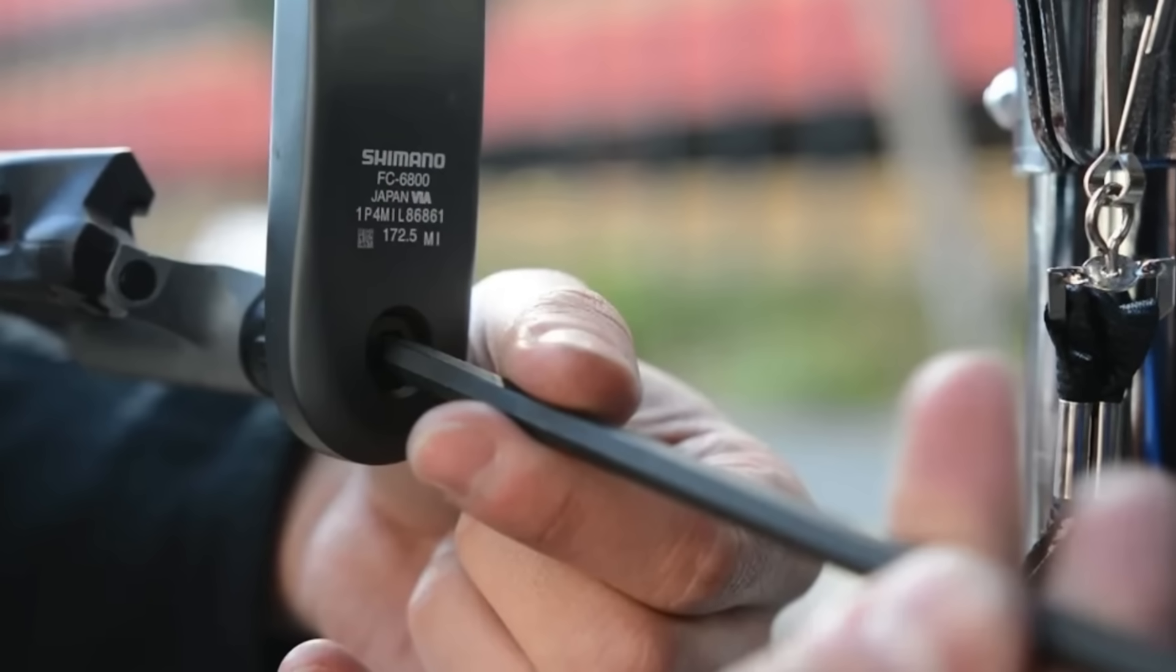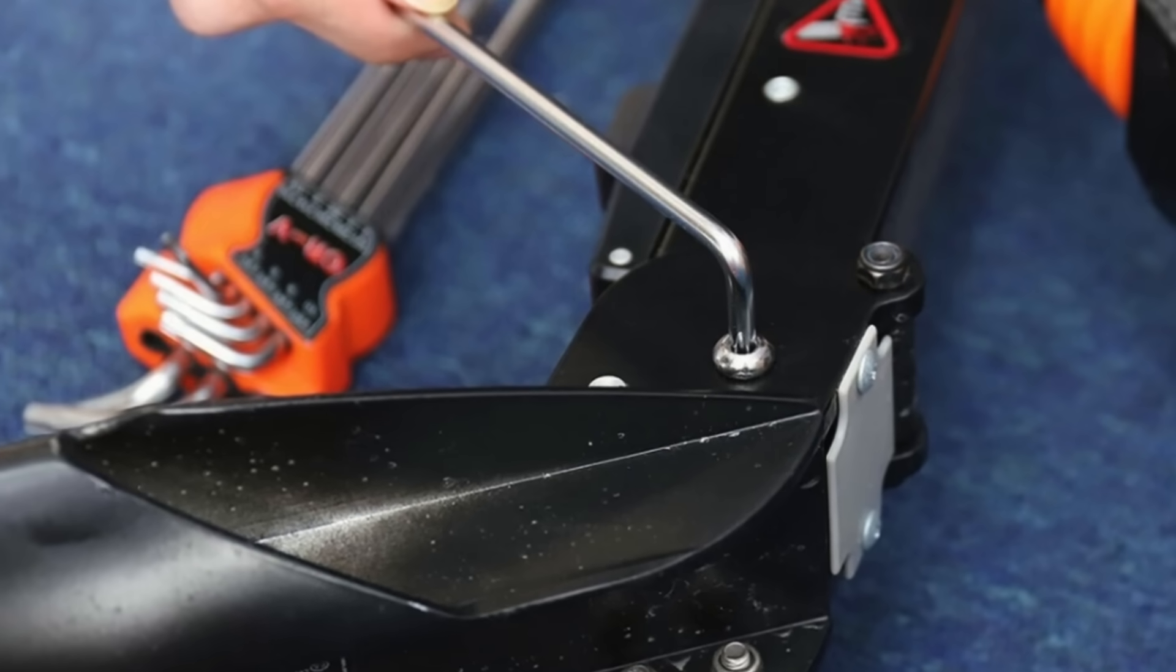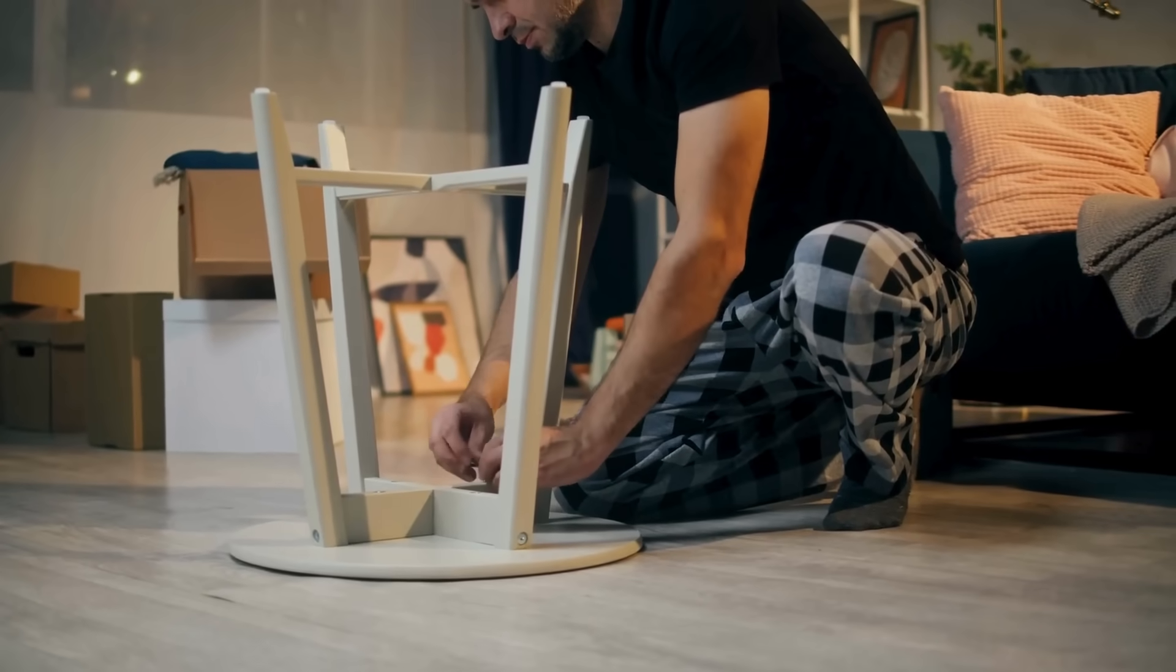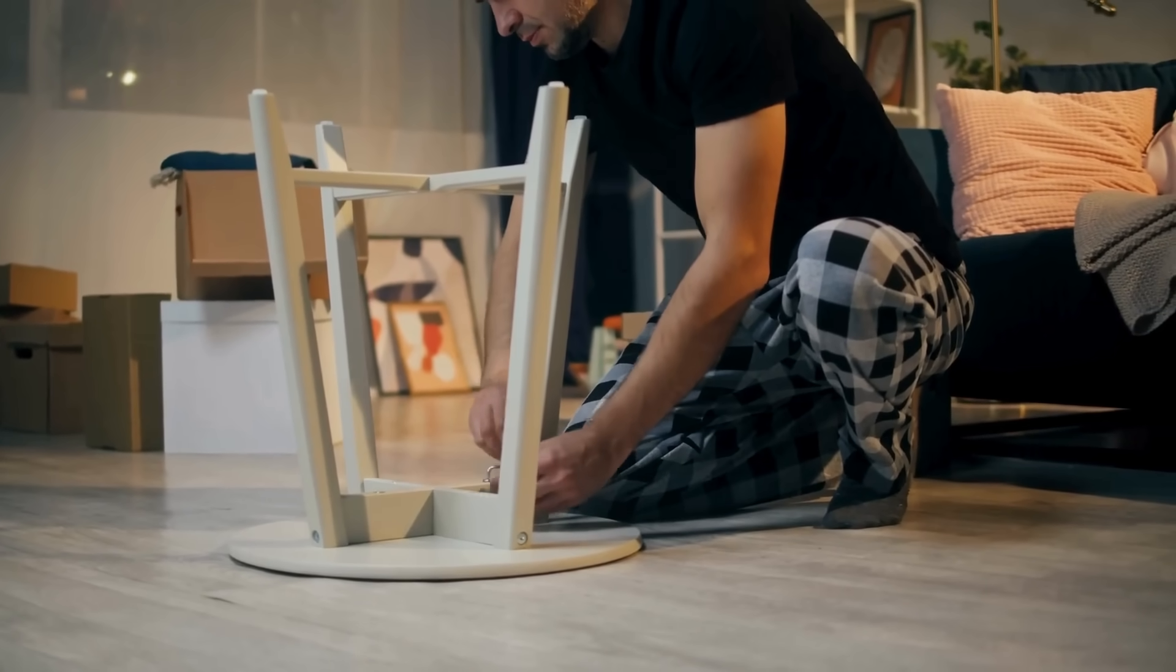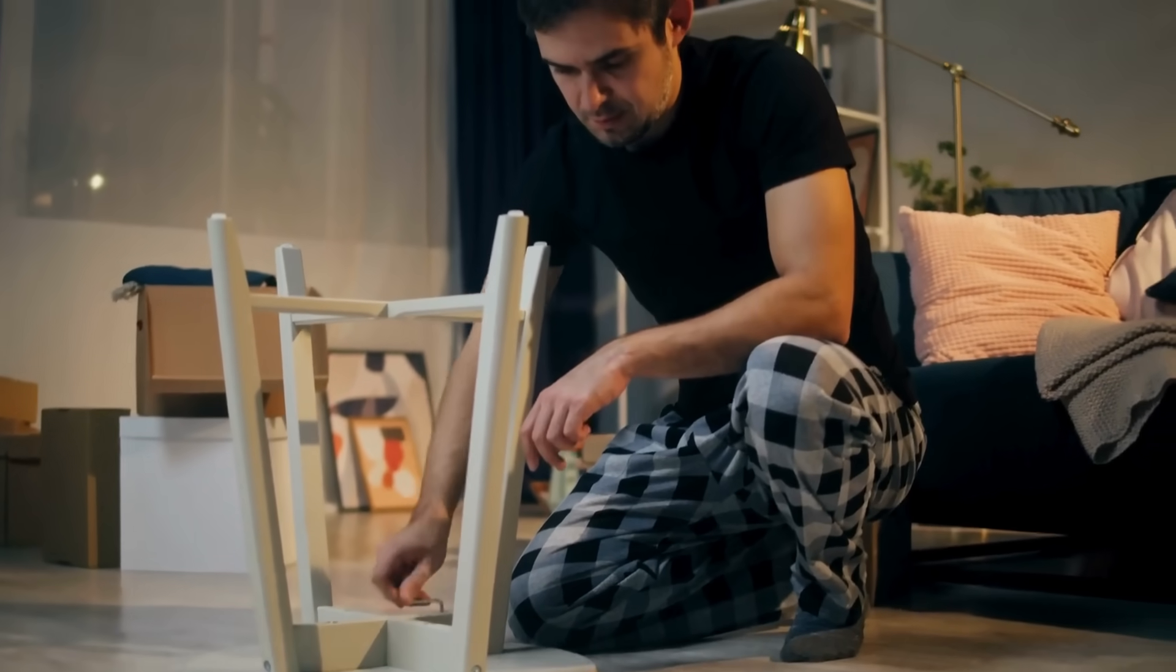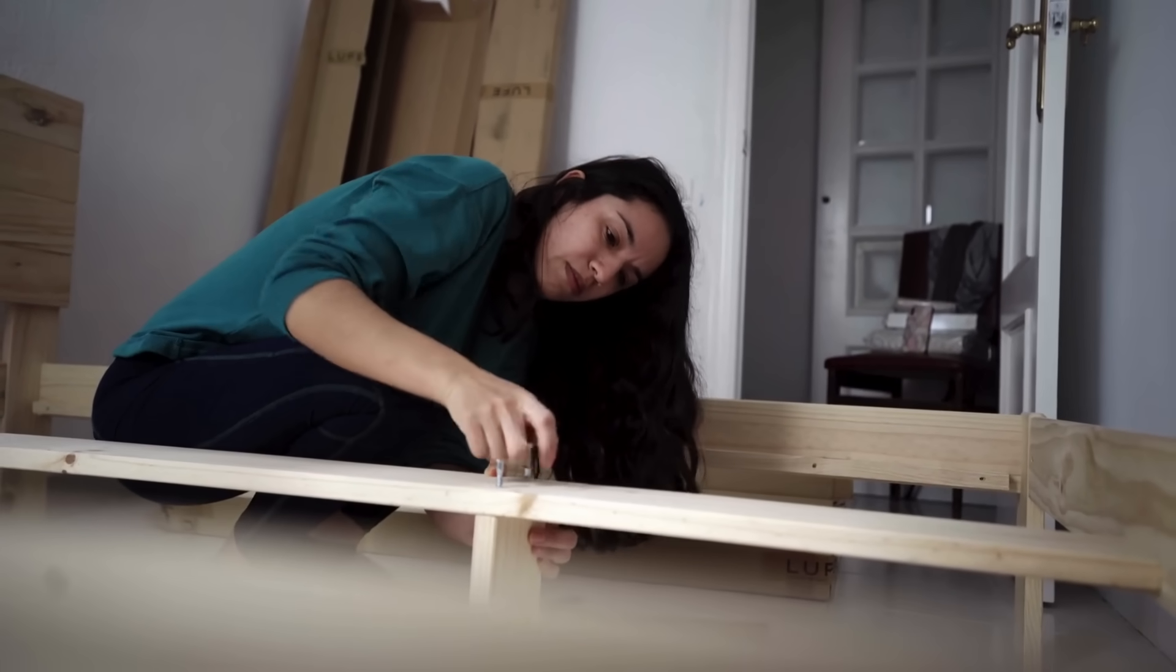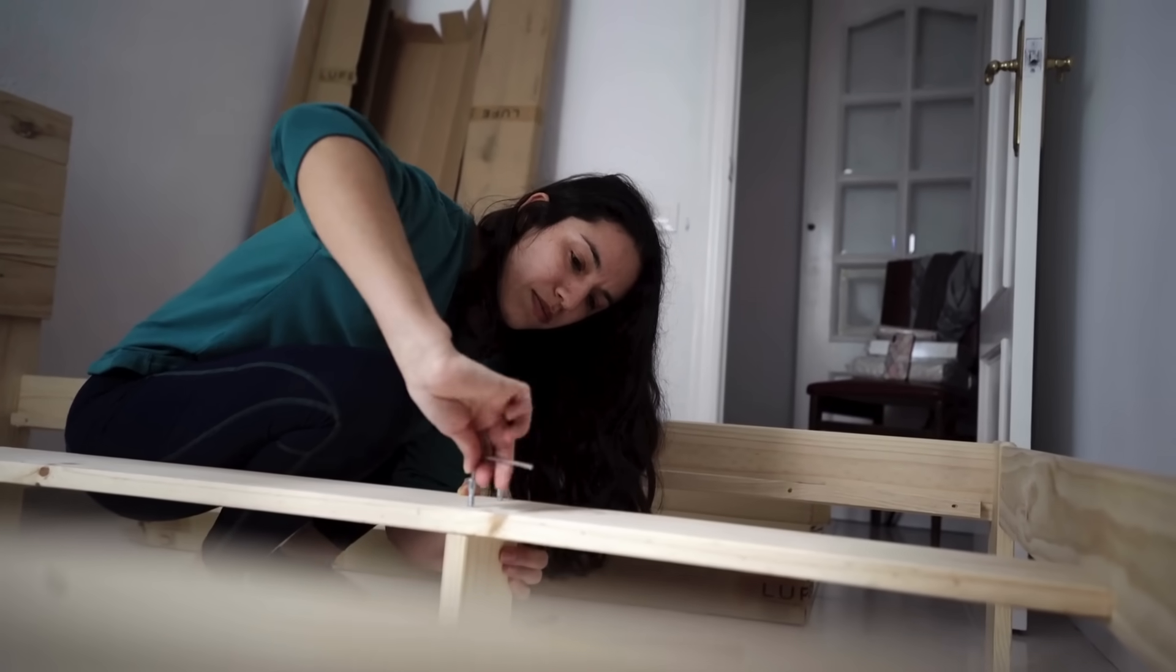Whether you buy a bike in Japan, assemble a chair in the Philippines, or repair a gadget in Germany, the Allen wrench you use today is practically identical in measurement and shape to the ones first designed in the early 1900s. That's a level of global uniformity that only a handful of tools have achieved.